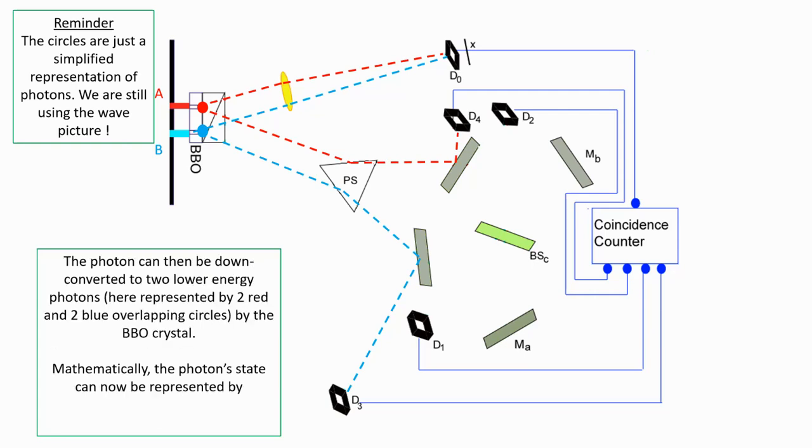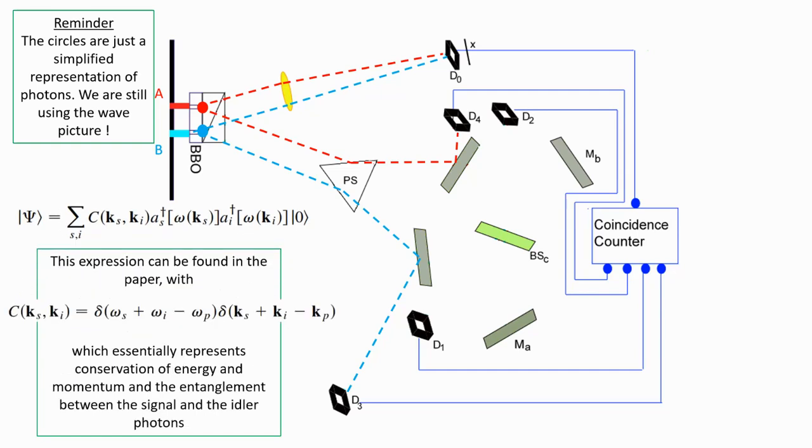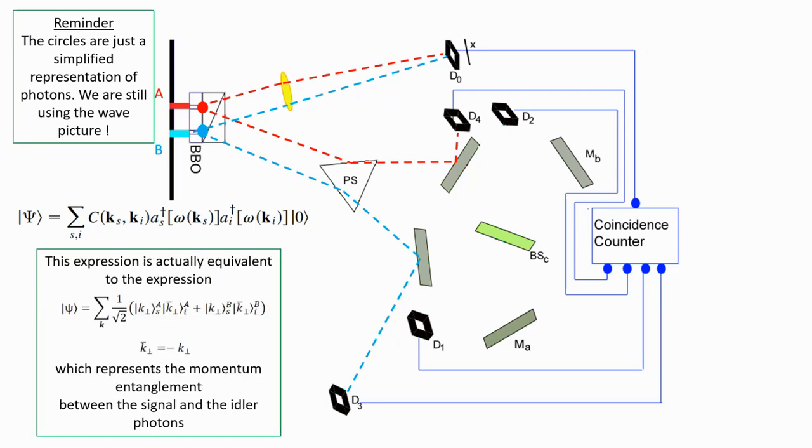The photon can then be down converted to two lower energy photons by the BBO crystal. The photon state can now be represented by... This expression can be found in the paper, with C representing the conservation laws and the entanglement. This expression is actually equivalent to the expression which represent momentum entanglement between the signal and the idler photon.